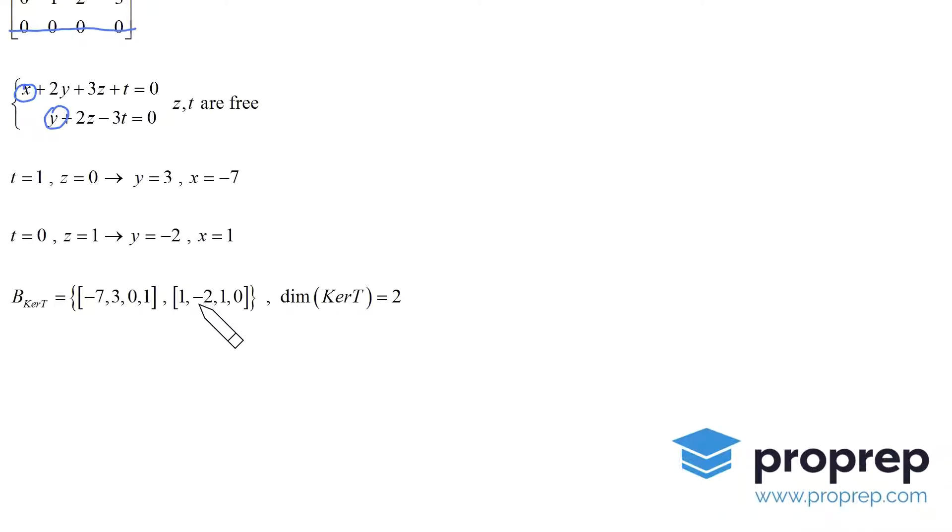As for the dimension, we just count: one, two. So the dimension of the kernel is two. That's also called the nullity of T.